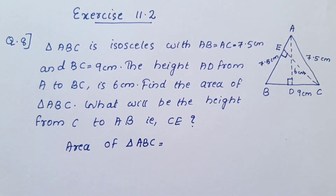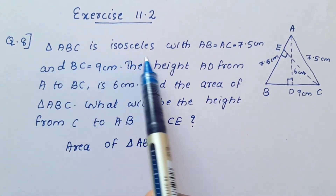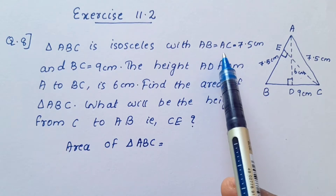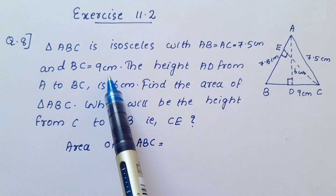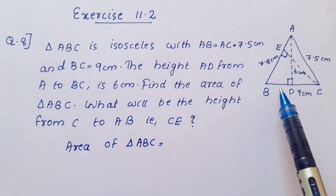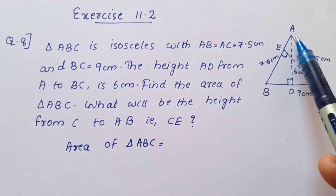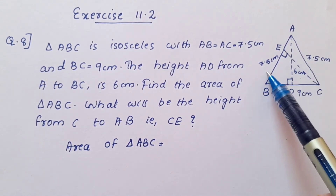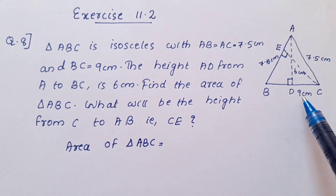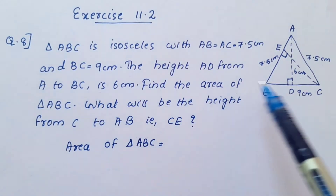Triangle ABC is isosceles with AB equal to AC equal to 7.5 cm and BC equal to 9 cm. The height AD from A to BC is 6 cm.